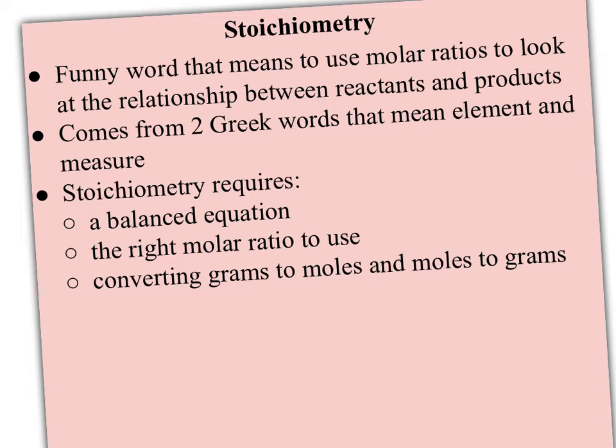Remember, stoichiometry is just a funny word that means to use molar ratios to look at the relationship or quantities, amounts between reactants and products so you can do some predicting about what's going to happen. It comes from two Greek words that mean element and measure, and that's really what we're doing - measuring the elements we start with to predict how much we'll have at the end, or looking at how much we need to produce and predicting how much we should start with.